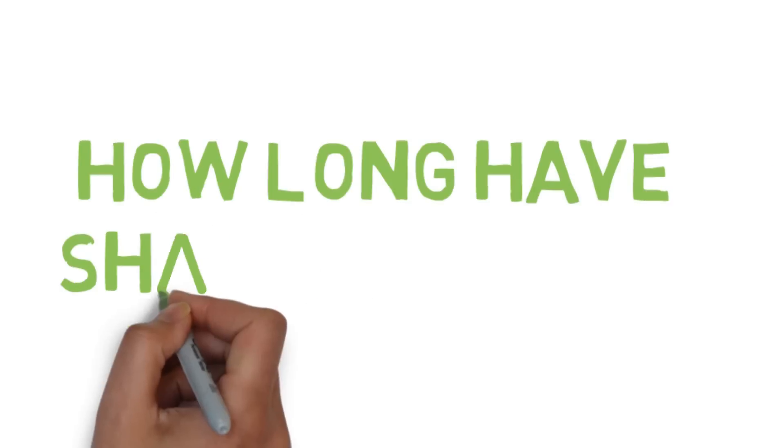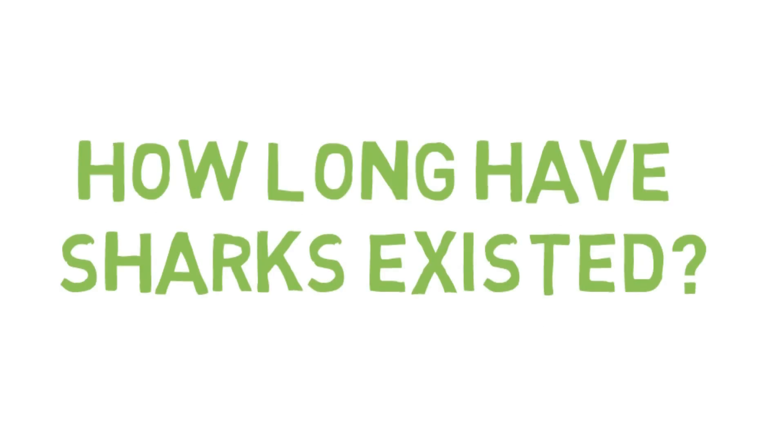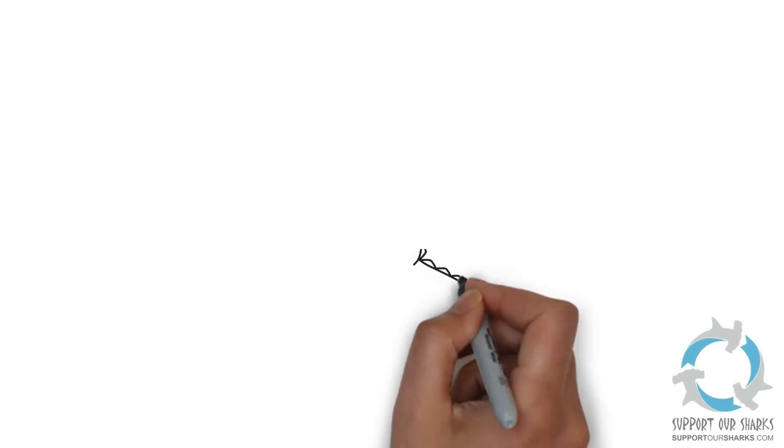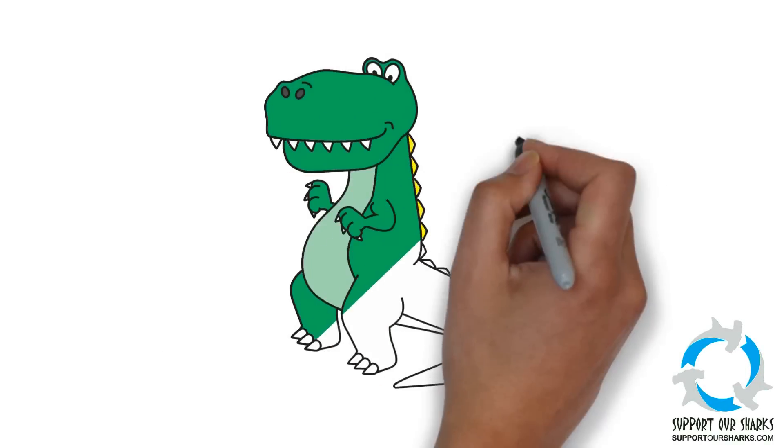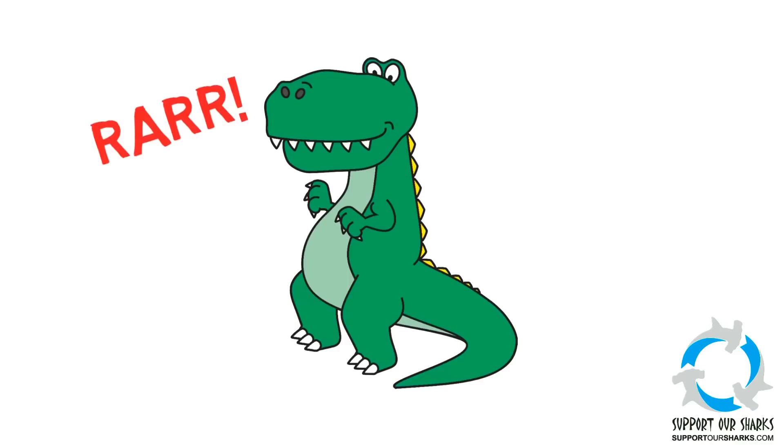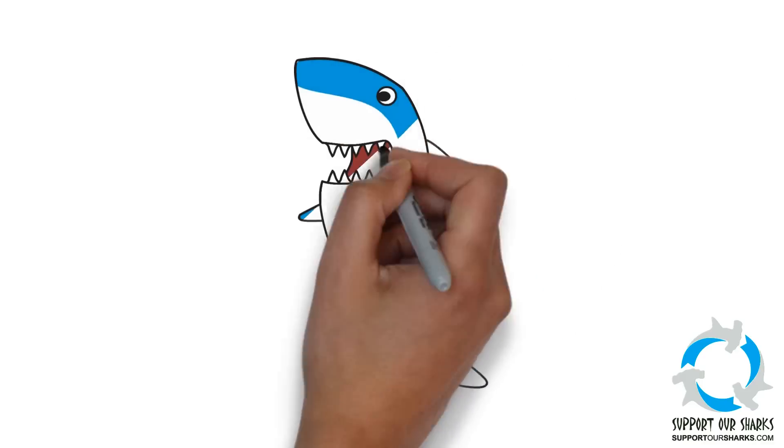How long have sharks existed? Many people tend to think of dinosaurs as dominating the prehistoric world. But dinosaurs didn't appear until about 200 million years after the first sharks.